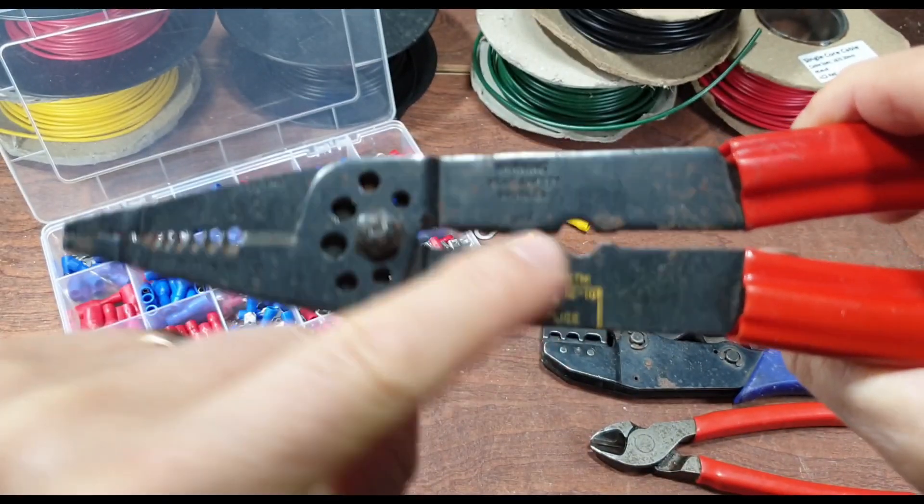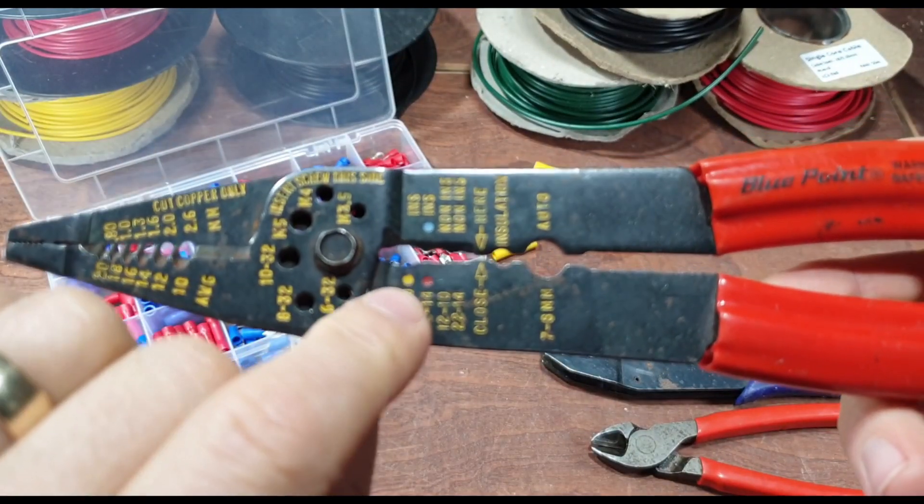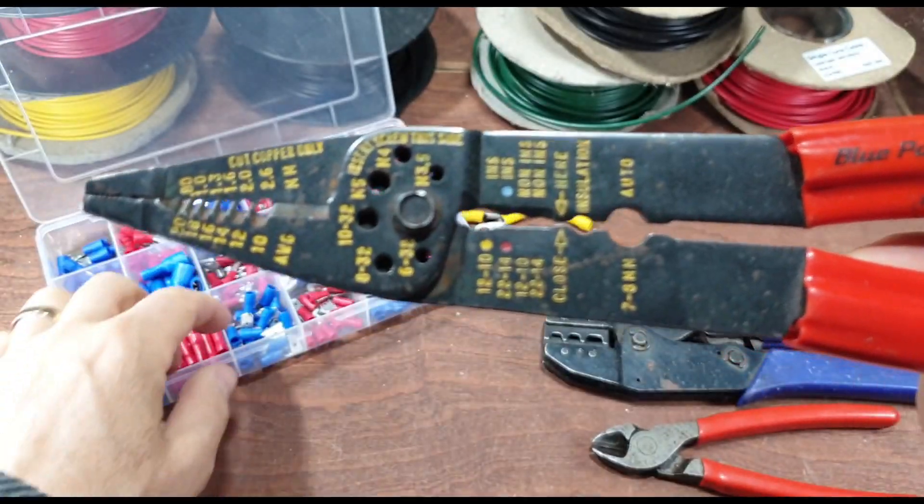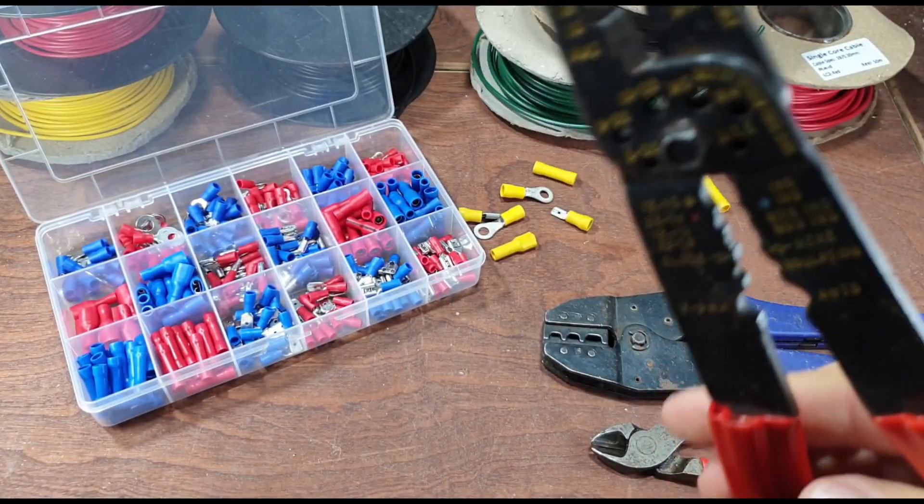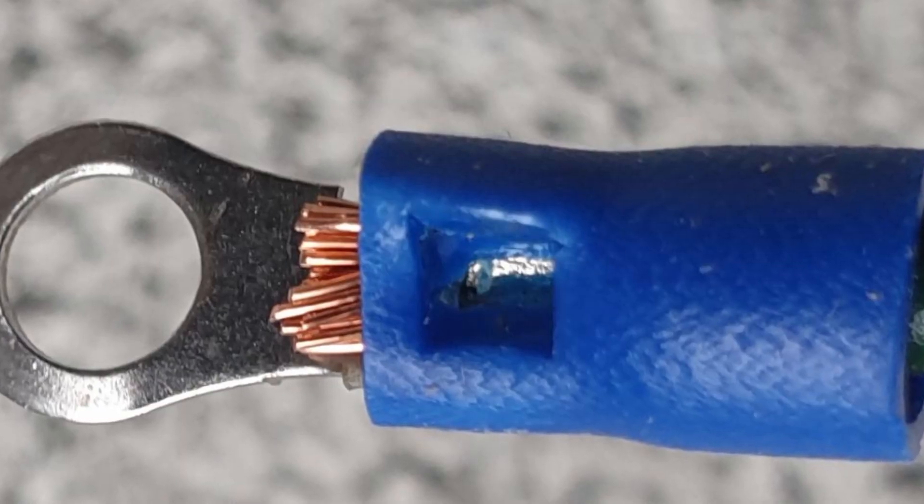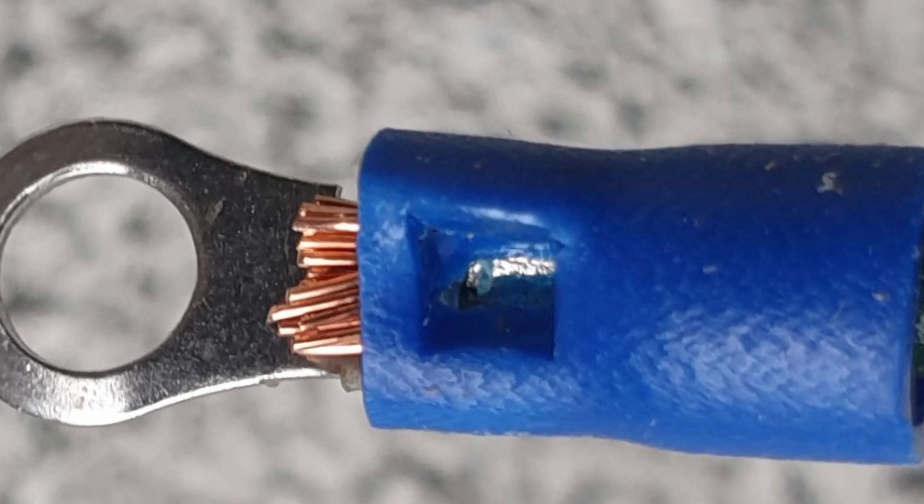You can crimp them with this side—yellow, blue, red indicating the different size connectors. The problem with these is you can overcook it. You can crush these down so much that you damage the connector.